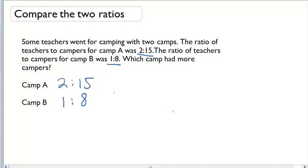In order to make these ratios comparable, I have to first put them in similar terms. So what I'm going to do is make the first term for both ratios the same number. Camp A starts as 2 to 15. I'm going to change camp B so that its first term is also 2 by multiplying both of its terms by 2. This will give me a new ratio of 2 to 16.